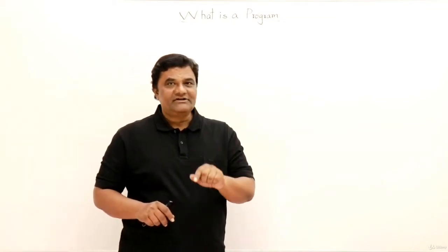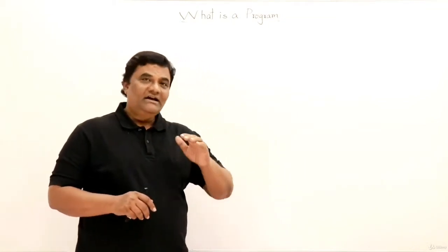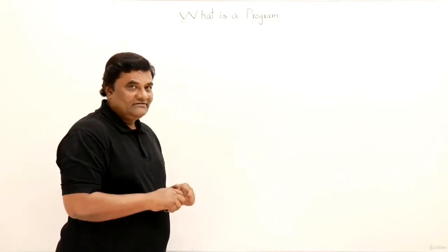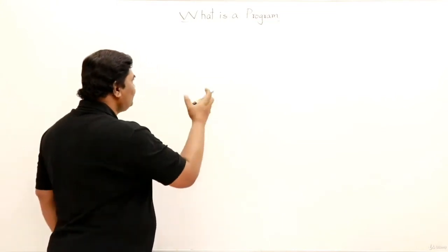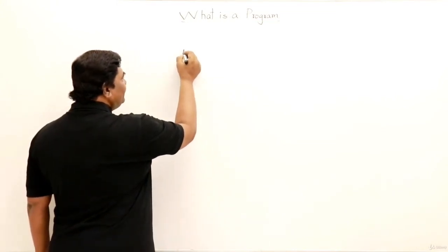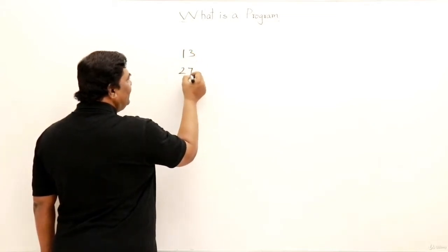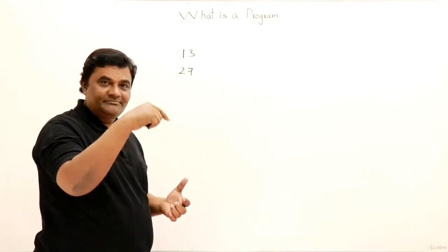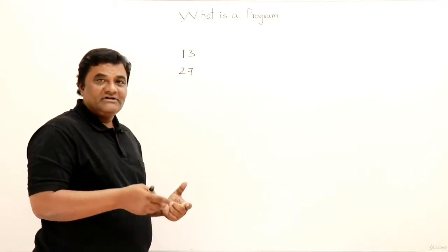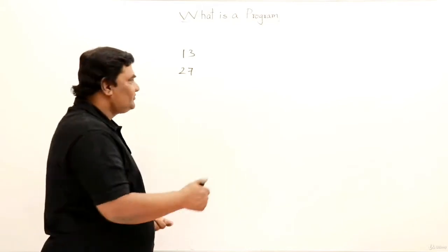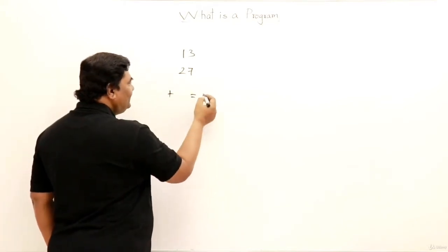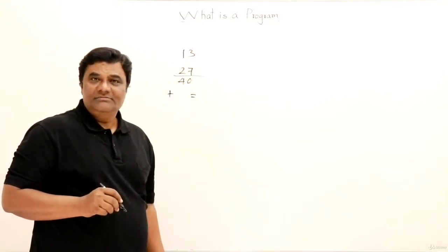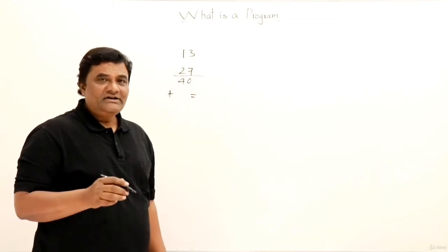That computation work can also be done using a calculator. Let's understand first how we use a calculator, then I'll show how we use computers and what programming means. For example, if I have two numbers and I want to add them — first number is 13 and second is 27 — I take a calculator, hit 13, press plus, hit 27, press equal, and get the answer: 40.